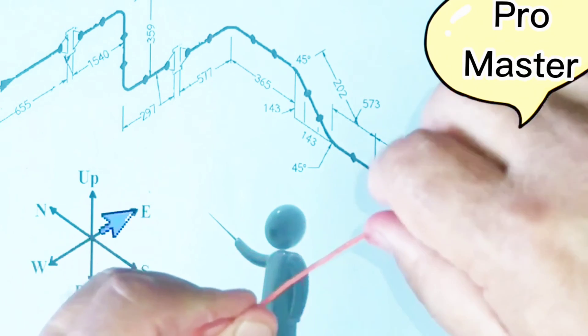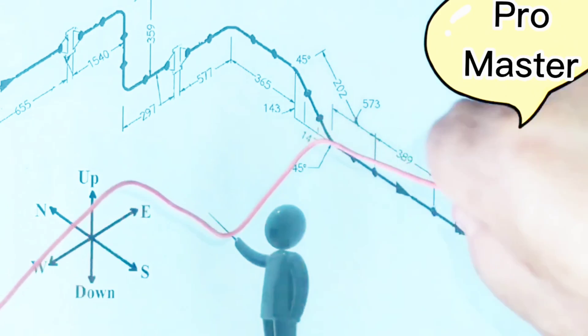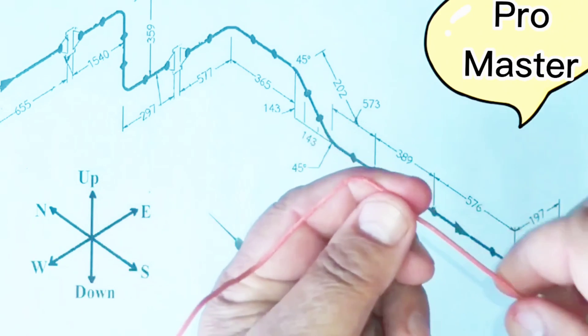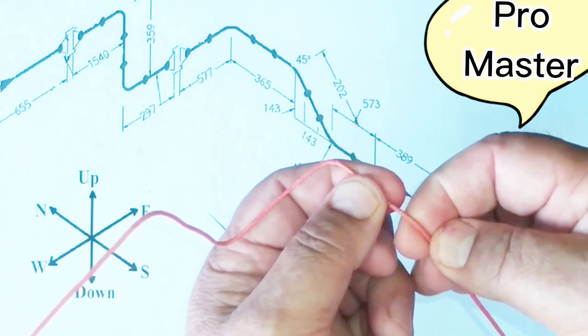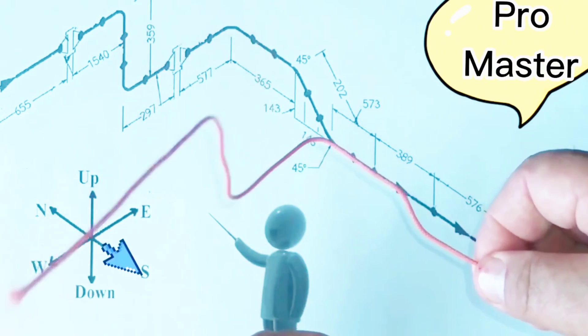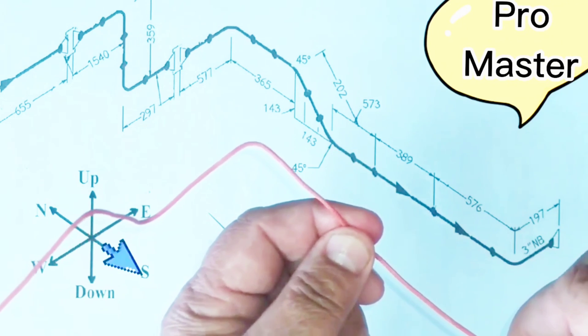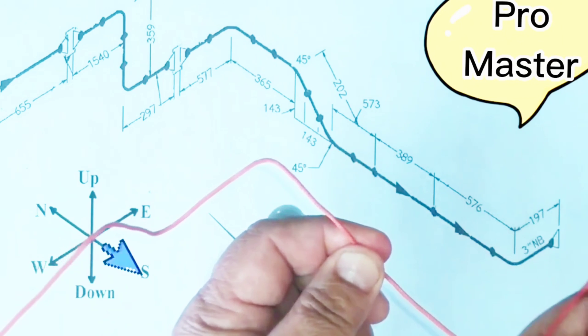Then we bending wire to the south direction. In this point we bending wire to the down then to the south under 45 degree angle. Then continue to the south direction. At last we bending wire to the east direction again.